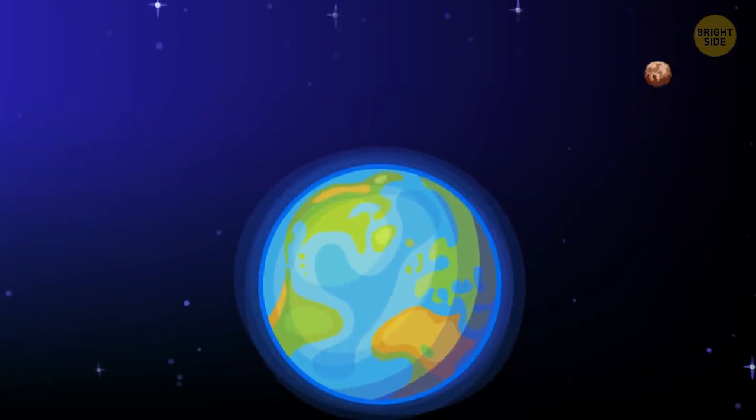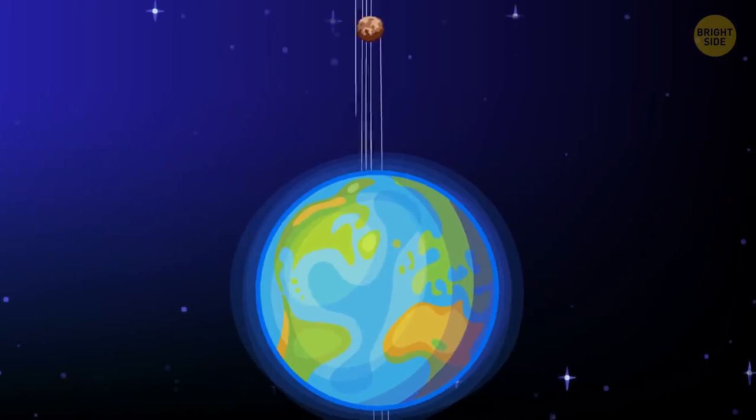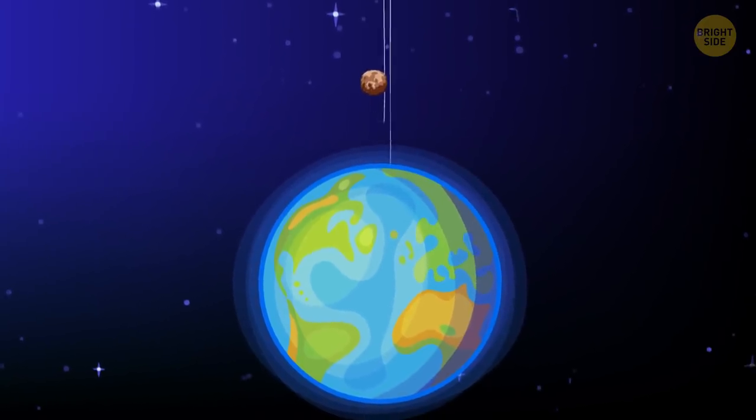Small space bodies can have quite a different direction, but if they come too close to the Earth, its gravity will turn them around and pull them down.